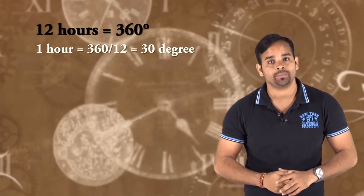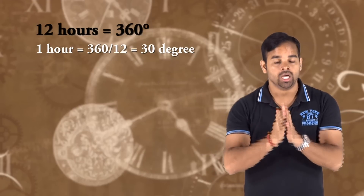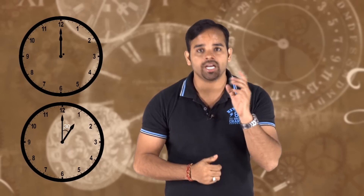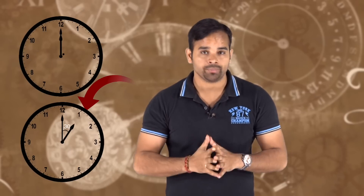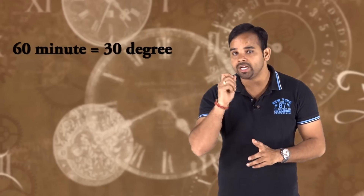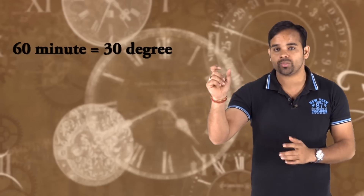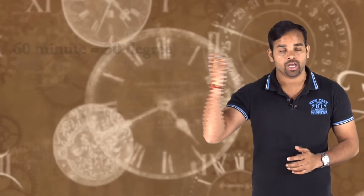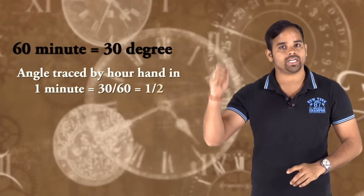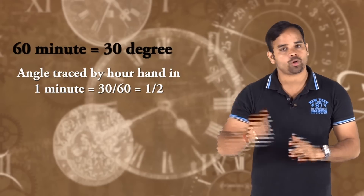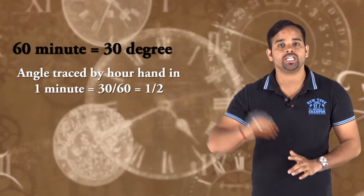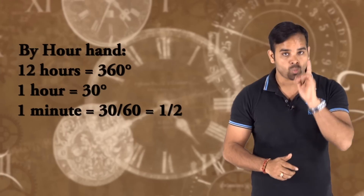Now, for the hour hand: one complete rotation is 360 degrees, and the hour hand completes this in 12 hours. That means the hour hand covers 30 degrees per hour. Since 60 minutes equals 30 degrees, we can say 1 minute is equal to 30 divided by 60, which is one-half degree. So the hour hand makes an angle of 0.5 degrees per minute.